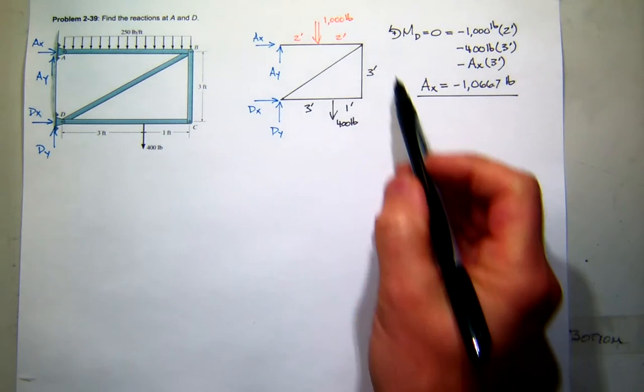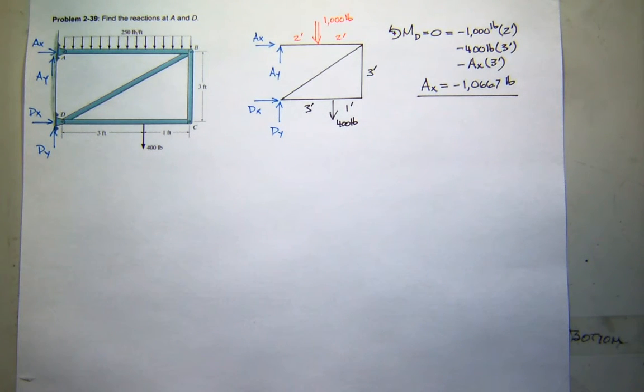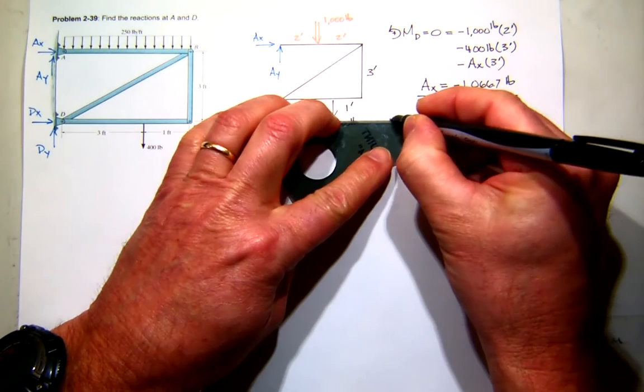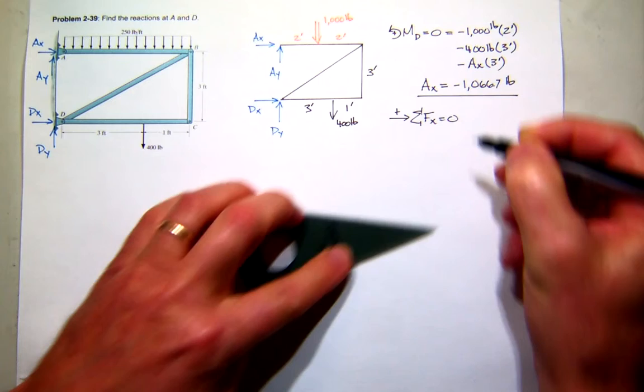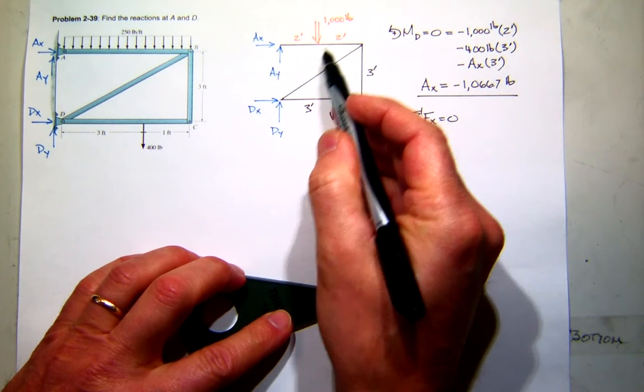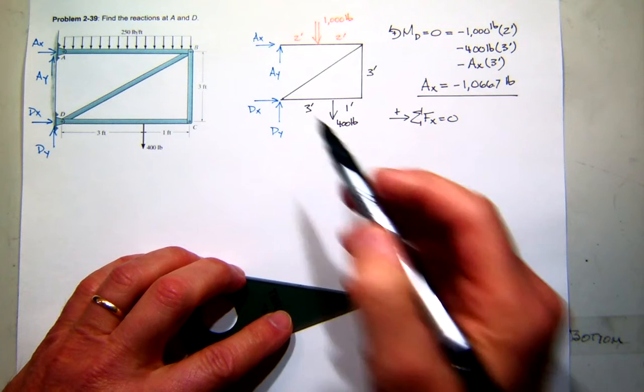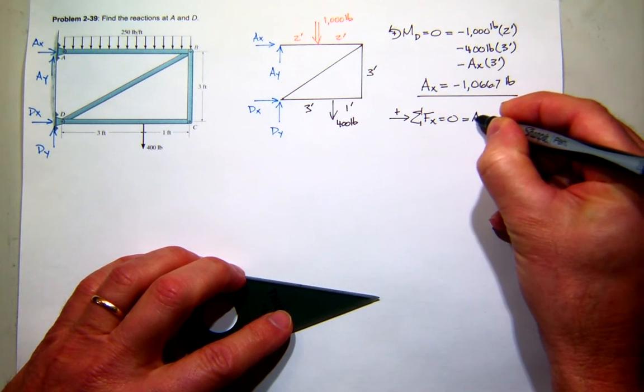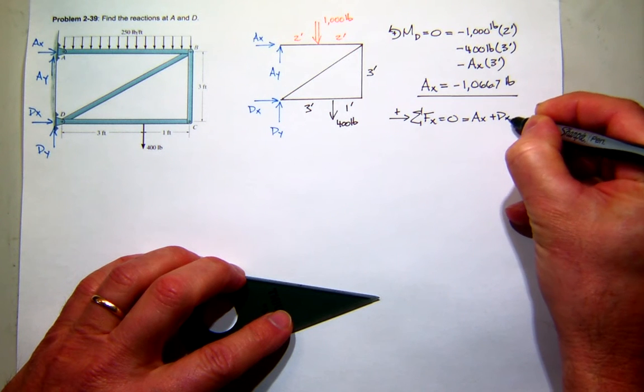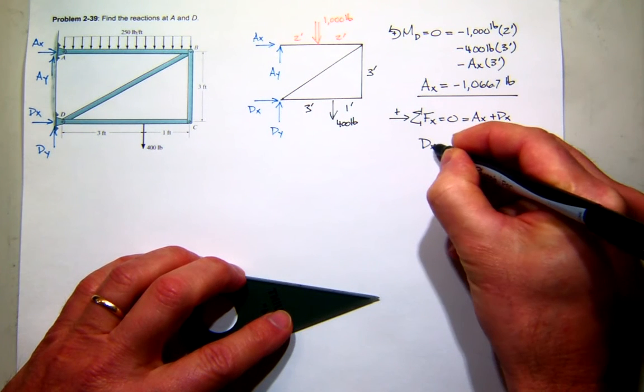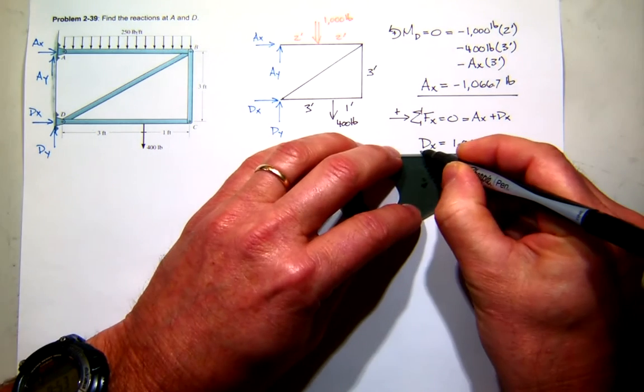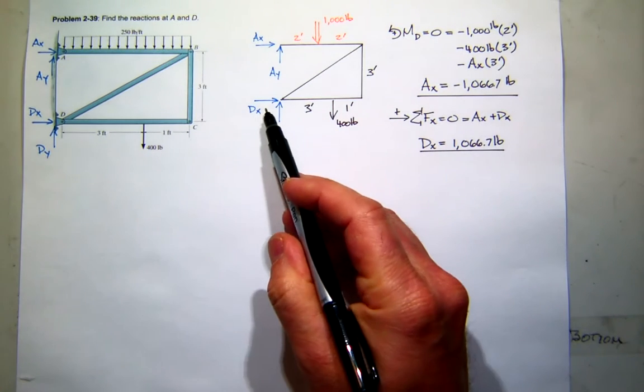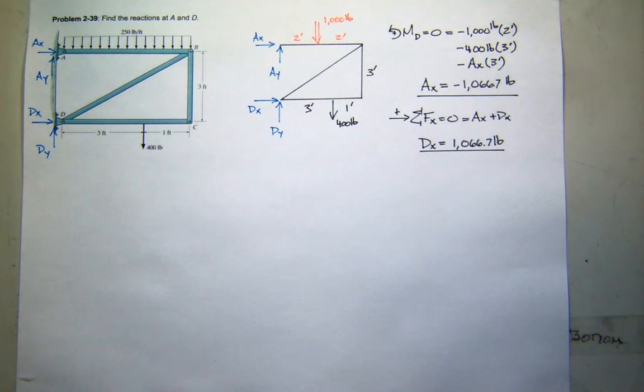What else can I get on this free body while I'm here? I've got two more equations. Well, I've got one X already. Can I get the other one? Yeah. So let's sum forces in the X direction. I've got Ax to the right, that's positive. I've got Dx to the right, that's positive. And what else? Nothing. So that one shouldn't be too hard to solve. It looks like Dx is minus Ax. And minus Ax is 1066.7 pounds. Positive. So I've got the right direction for D. Wrong direction for A.